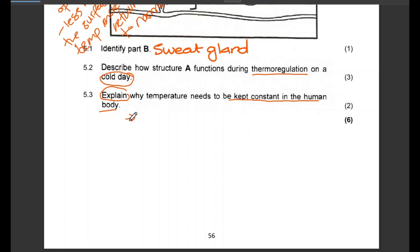So the temperature will need to be kept constant in order for enzymes to function optimally at the normal body temperature, which is obviously 37 degrees Celsius.